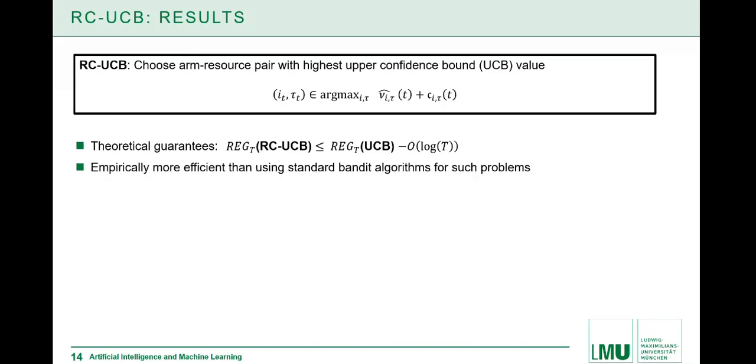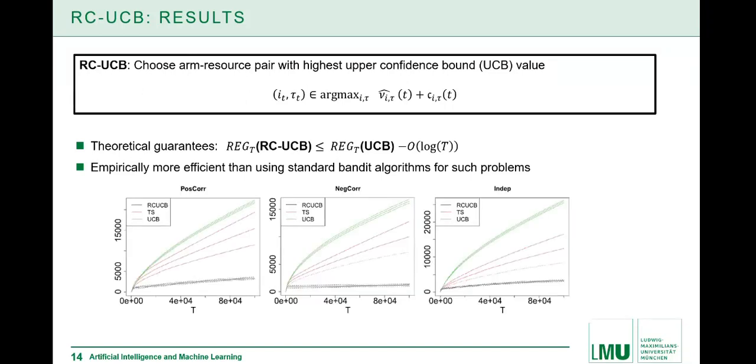We also considered empirically how this algorithm performs. We considered different scenarios on the correlation or dependence between the resource consumption and reward distribution, so positive correlation, negative correlation, and independence. In all cases, we see that our algorithm is performing way better because it's more suitable to learn the structure, the dependency between the two distributions.